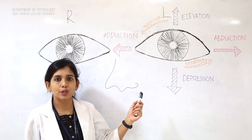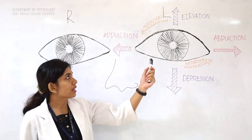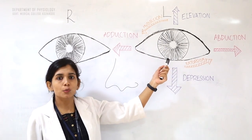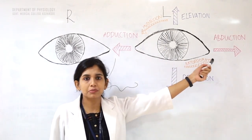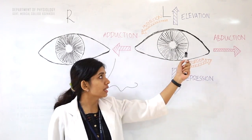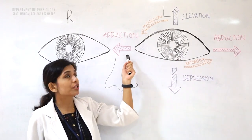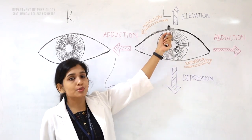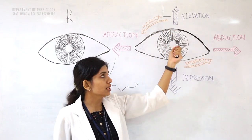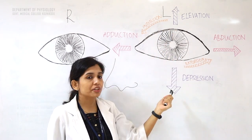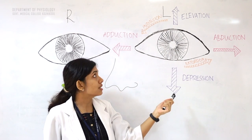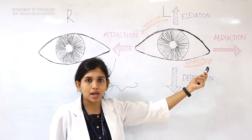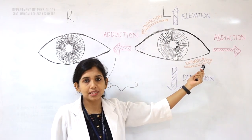Now we will look at ocular movements. Considering the left eye: when the eyeball moves away from the midline that is abduction, the eyeball moving towards the midline is adduction, and the eyeball moving upwards is elevation. Eyeball moving downwards is depression. There is also intorsion and extorsion of the eyeball, which cannot be tested.